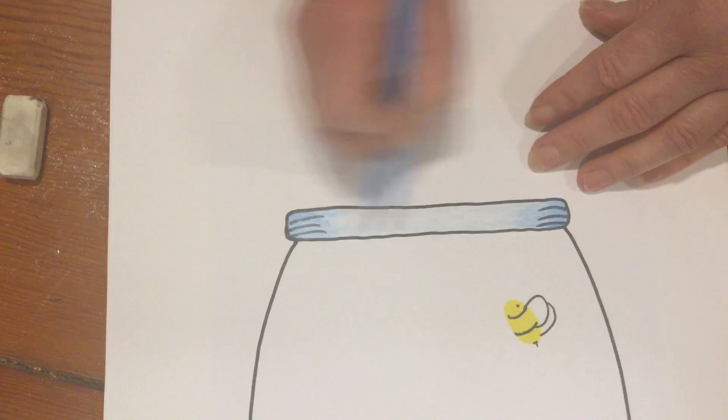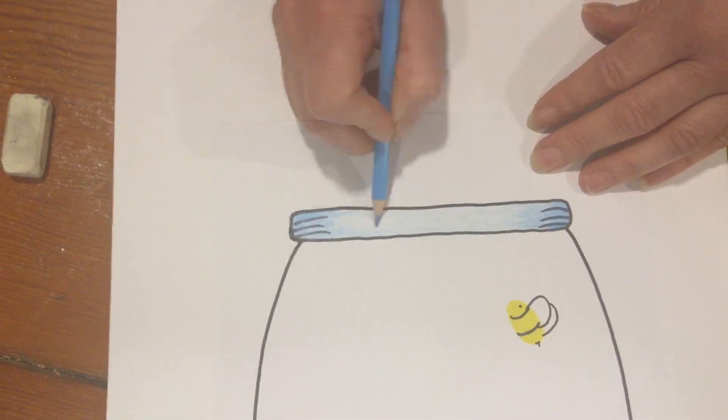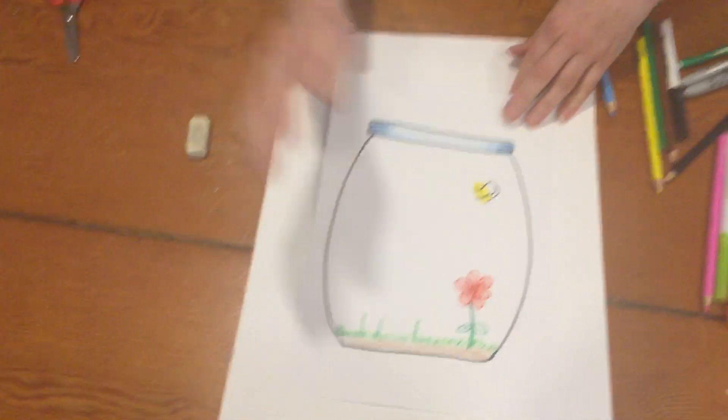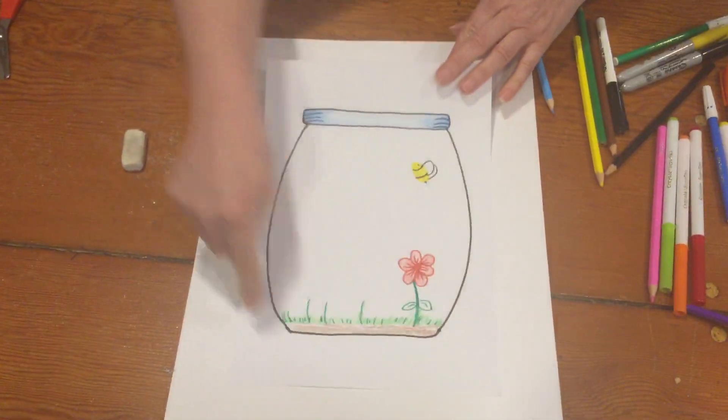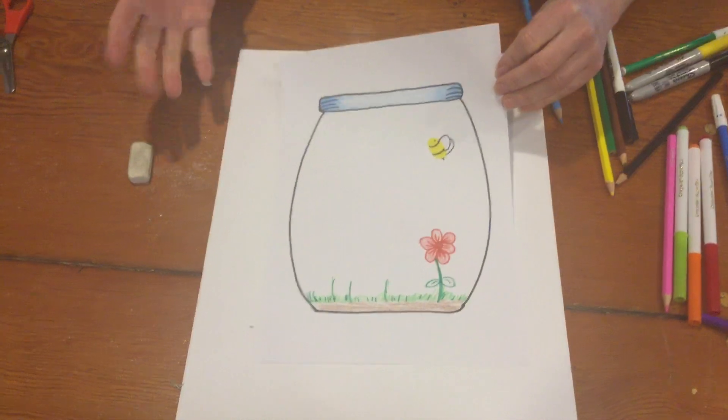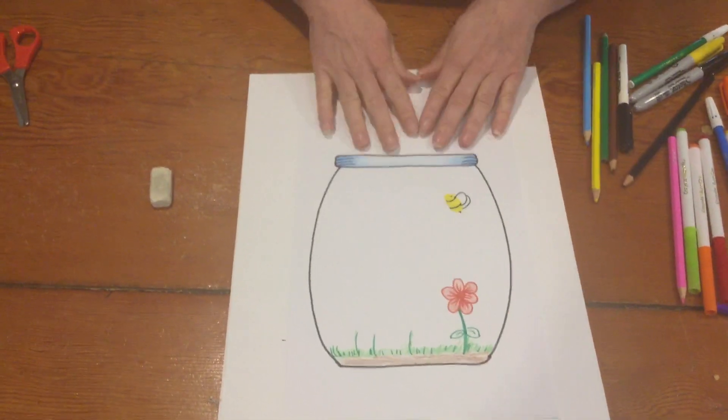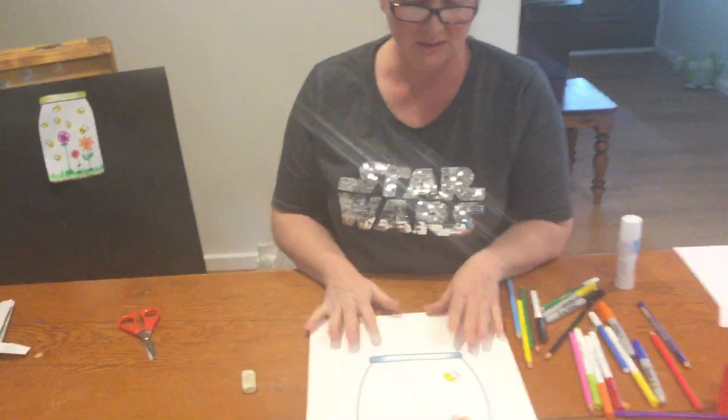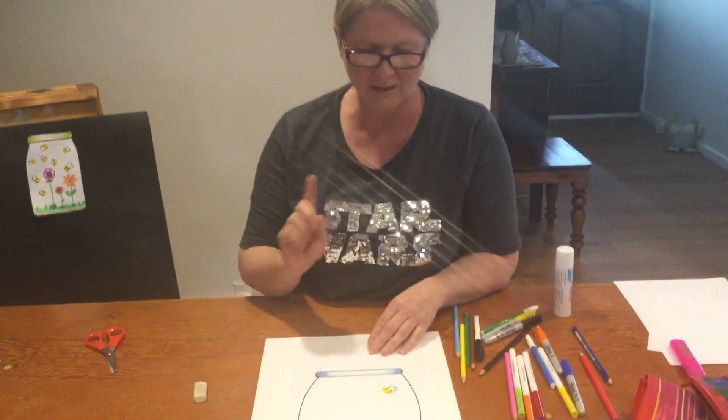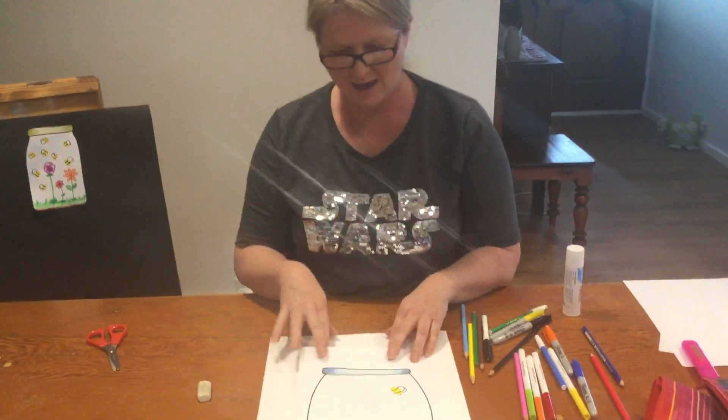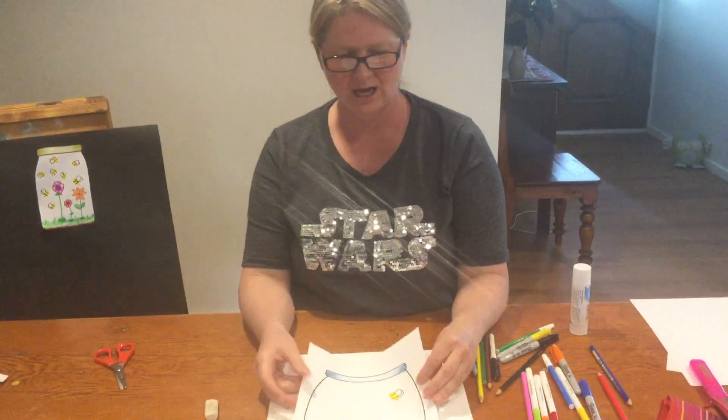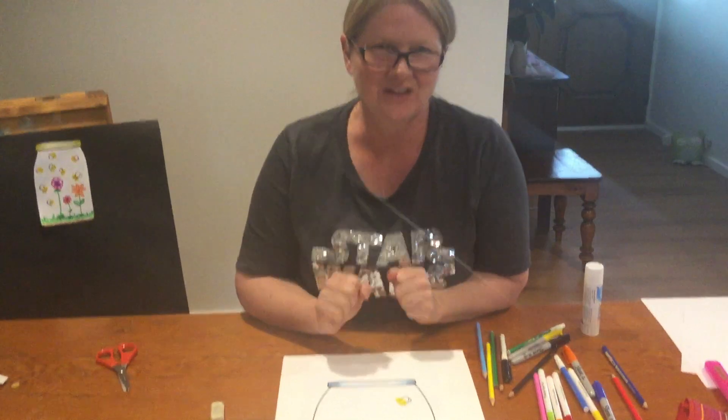So once your jar is full of bees and flowers, you can cut it out and place it on another piece if you want to, or you can just leave it on that white piece. When you finish, take a picture, upload it to SeeSaw, and hopefully I can see lots of jars with bees in them. Happy art-ing!